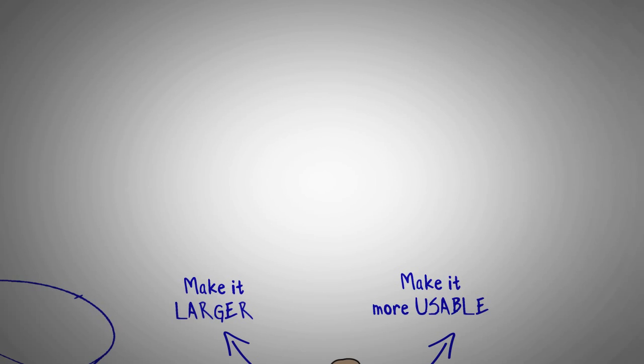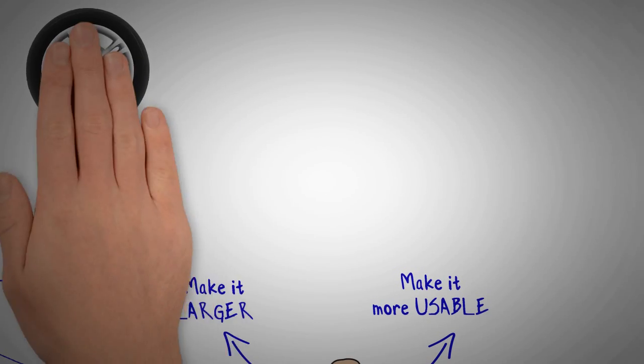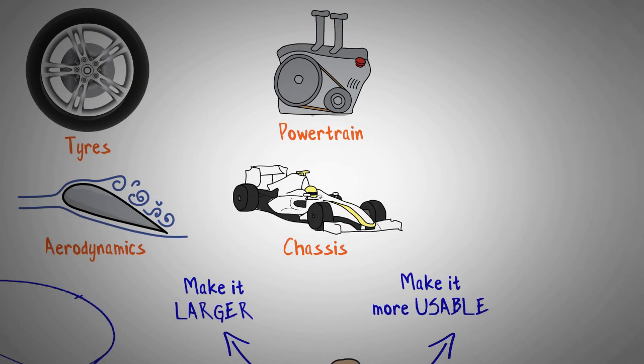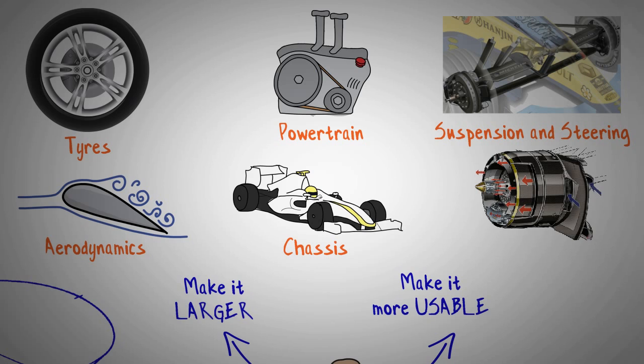To do this, engineers count on many subsystems that are part of the car. We can classify them in these main groups: tires, aerodynamics, powertrain, chassis, suspension and steering, brakes, cooling, etc. We will go in detail through all of them and discuss how they can be used for the car.